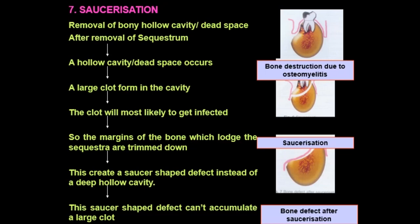Saucerization is the excision of margins of necrotic bone overlying a focus of osteomyelitis. It is useful in chronic forms because it permits removal of the sequestrum and enables better visualization. It is performed with a large round burr, reducing the buccal cortex to the level of unattached mucosa, producing a saucer-like defect rather than a deep hollow cavity. Both sequestrectomy and saucerization are carried out after the acute phase has subsided, enabling a better host defense mechanism to overcome the virulence of organisms.